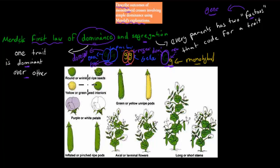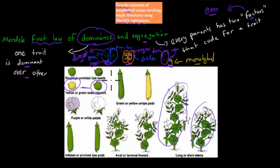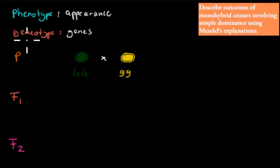Now we'll go through the actual procedure. In this experiment Mendel looked at different variations - we looked at yellow and green seeds, but he also looked at long and short stems, so we're going to go over both of those crosses. First, we introduce phenotype and genotype - these are names you should become familiar with.